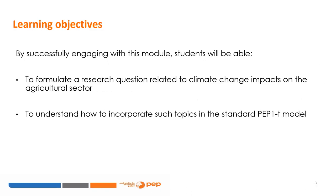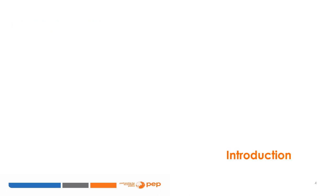By successfully engaging with this module, we hope you will be able to formulate a research question related to climate change impacts on the agricultural sector, and also to understand how to incorporate such topics in the standard PEP1T model. Before using the PEP1T model, some preliminary questions have to be answered.